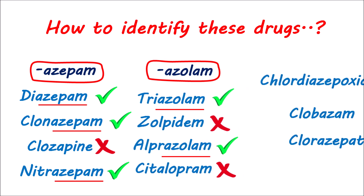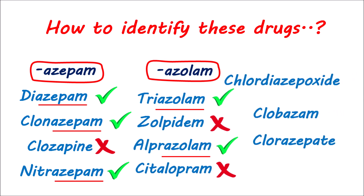Nonetheless, we can find a few benzodiazepines with different suffixes. For instance, chlordiazepoxide is an earlier benzodiazepine that was developed with a different suffix. Similarly, clobazam is a 1,5-benzodiazepine with a different suffix. Finally, clorazepate is a benzodiazepine with 3-carboxylic acid, so it exists as an anion. These are a few of the exceptions to the main suffix of benzodiazepines. Apart from these, all other benzodiazepines have either of the two suffixes, such as -azepam or -azolam, which makes them easy to identify.